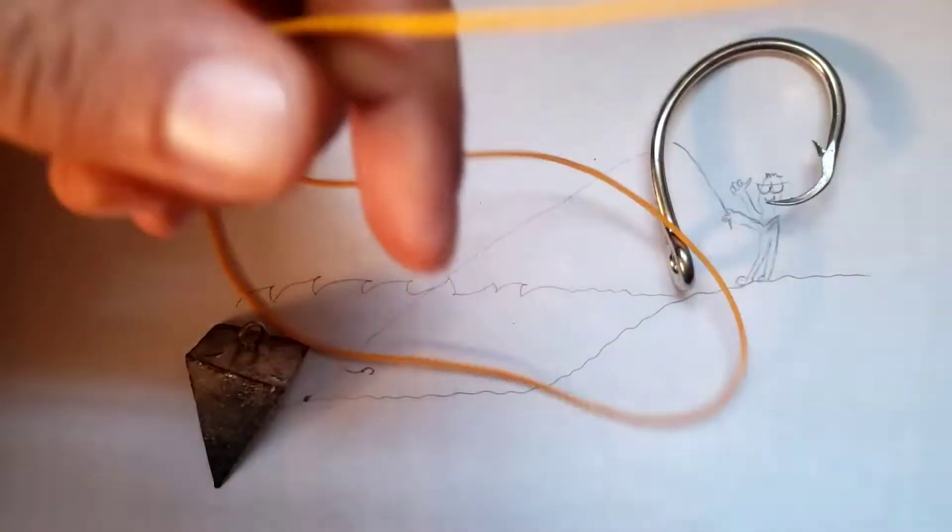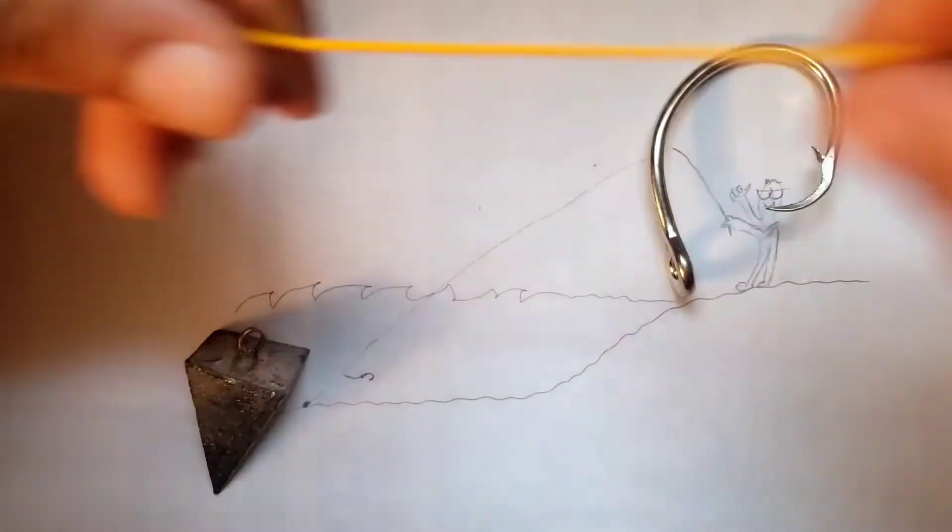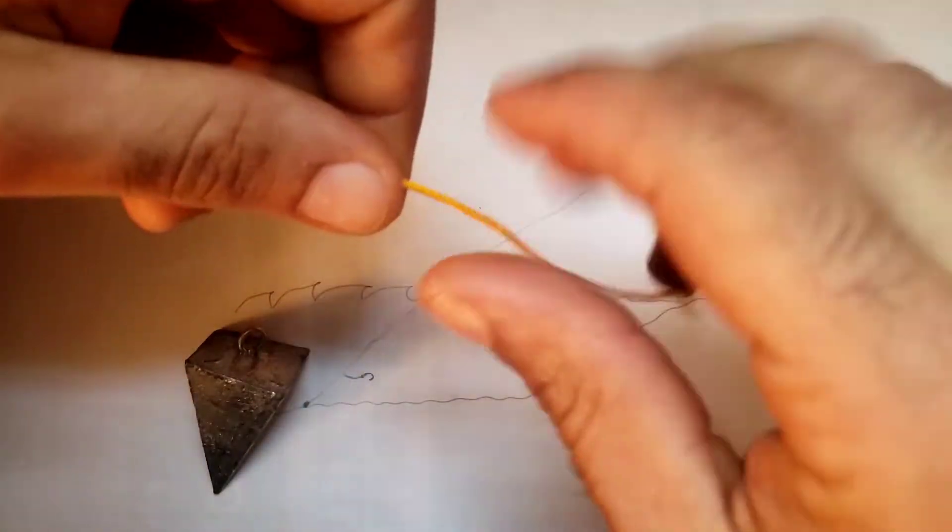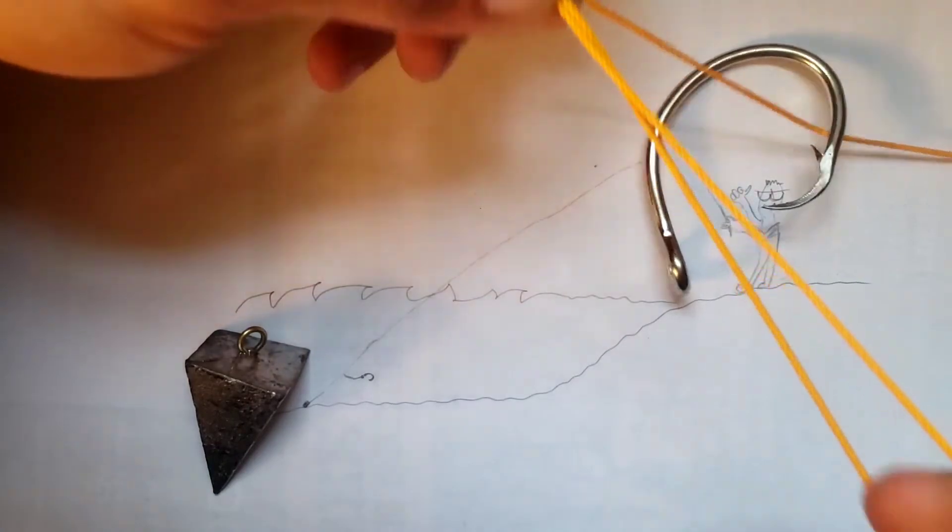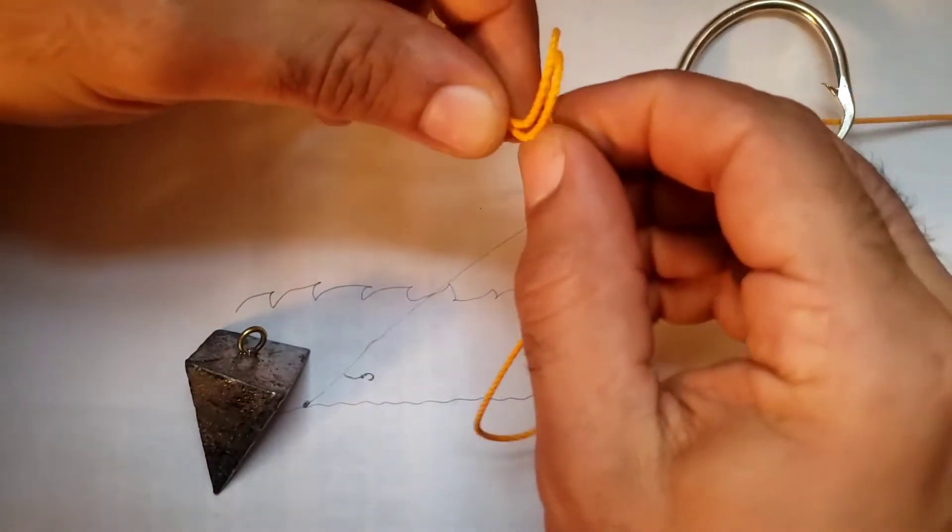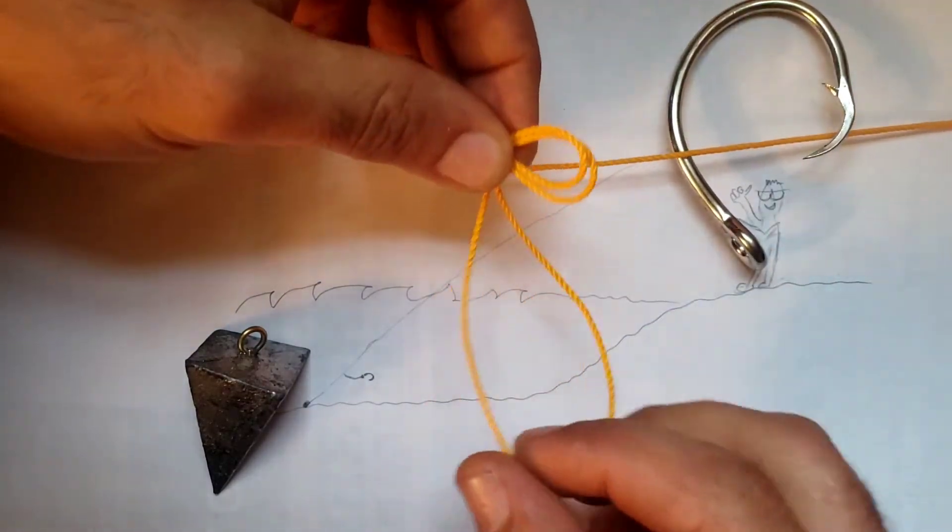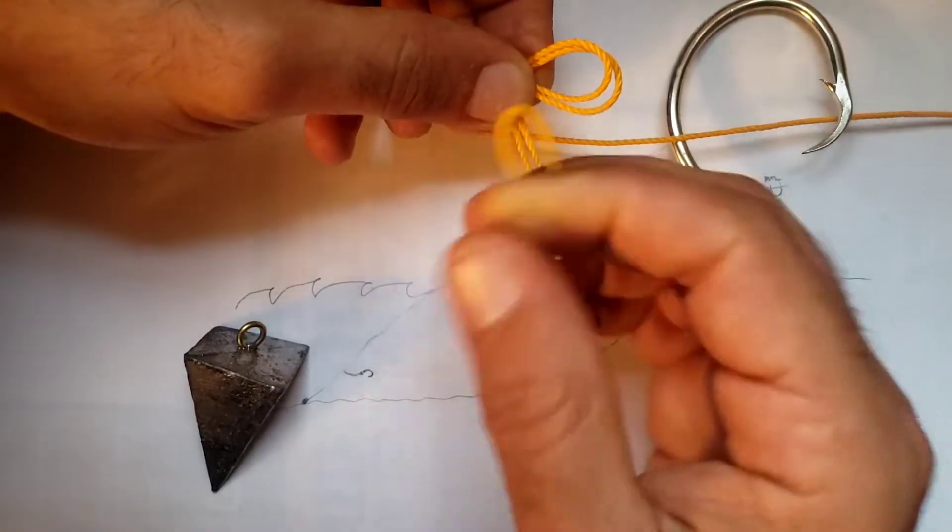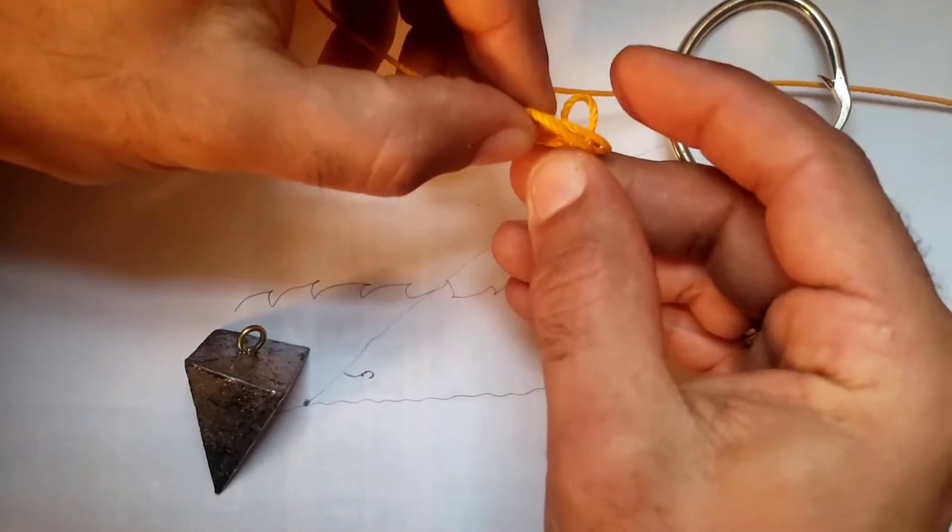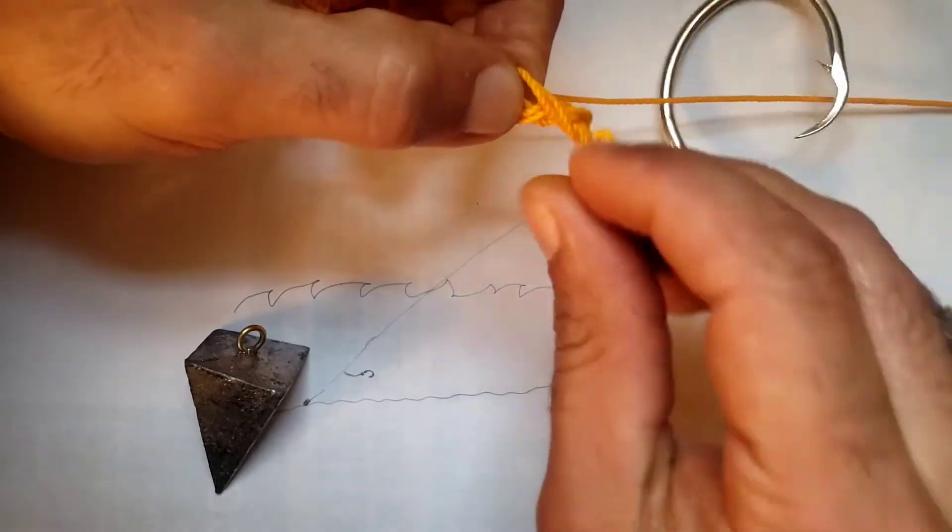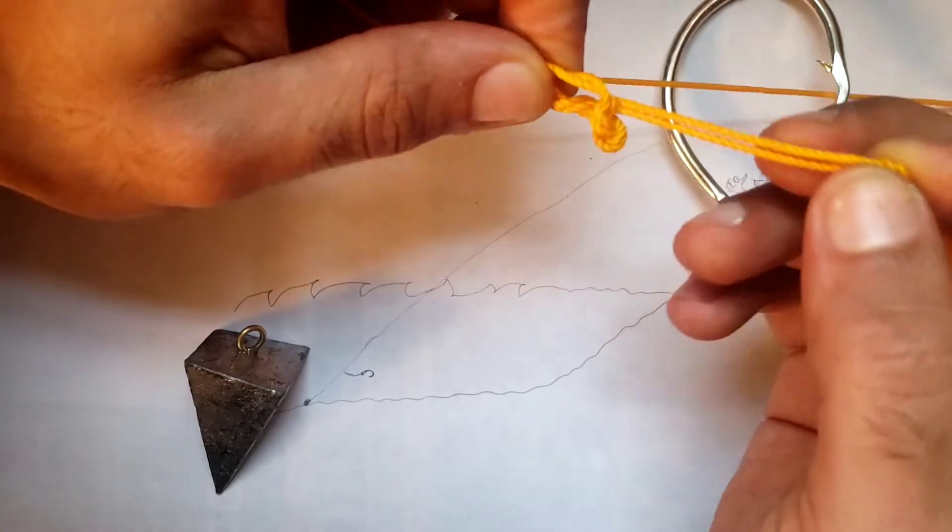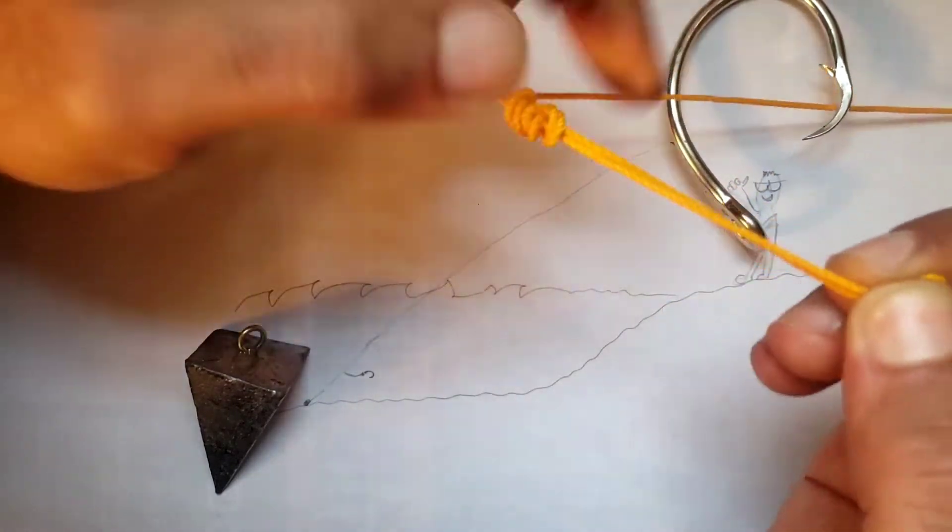Here's how you're going to tie it. This is the line coming from your rod. Rod's that way. Take a loop like so, take the loop over like so. Go through it once, twice, thrice. Pull that up.